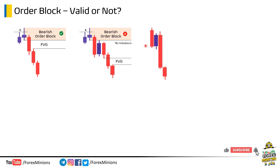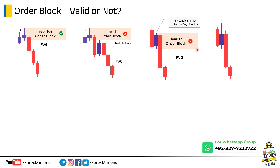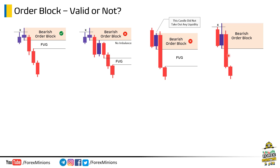This is another example — a bearish order block. Although this candle has an imbalance, it is still not valid. Reason: this candle did not sweep any liquidity. If a candle does not take out liquidity, it will not be a valid order block. Another example: applying our rules, this highest candle took out the liquidity of the previous high, and secondly, market created this price imbalance — a fair value gap zone. So this is a valid order block.